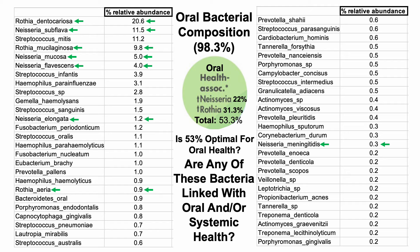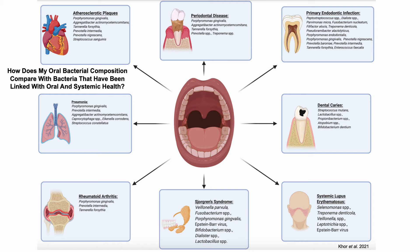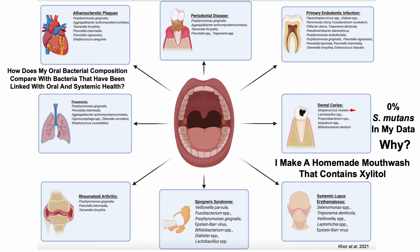How does my oral bacterial composition compare with bacteria linked with oral and systemic health? Starting in the mouth, one bacterium — Streptococcus mutans — has been linked with cavity formation, dental caries. In my salivary sample, there was no Streptococcus mutans. One reason may be my homemade mouthwash containing xylitol.